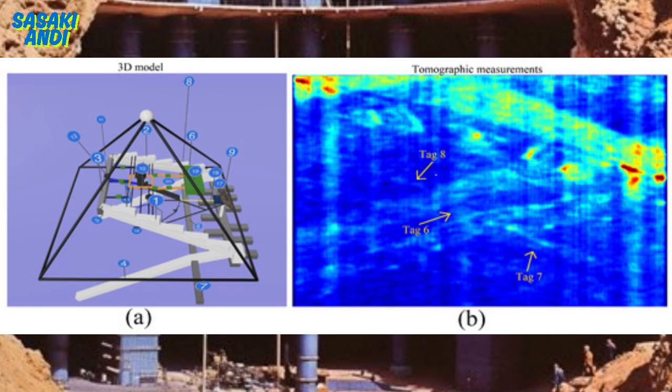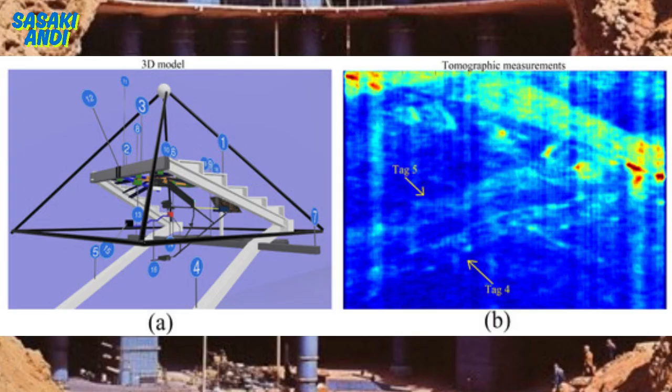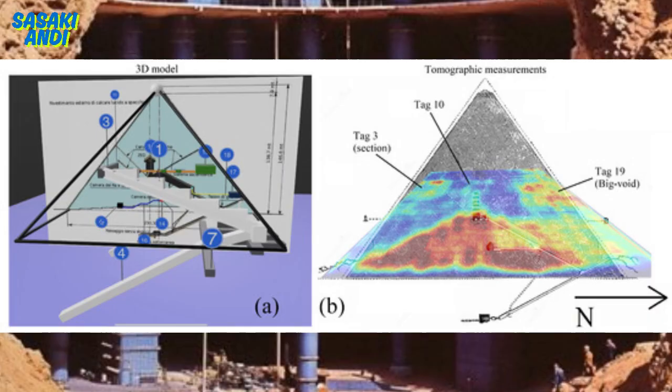It seems like the Great Pyramid might have been a multifunctional structure, incorporating sophisticated engineering and possibly even harnessing the power of sound and water. Exactly. The research is painting a picture of ancient Egypt that is far more advanced and complex than we previously thought, and it's raising all sorts of fascinating questions about what else we might discover about the civilization and others like it.